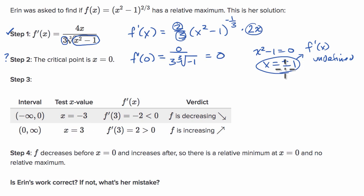This is larger than the critical point one, and this is less than the critical point negative one. What she should have tried is x equals 0.5 and x equals negative 0.5.